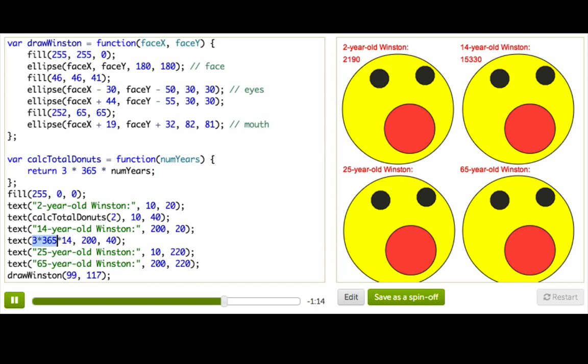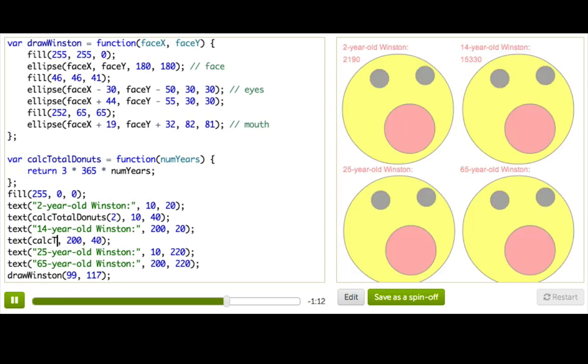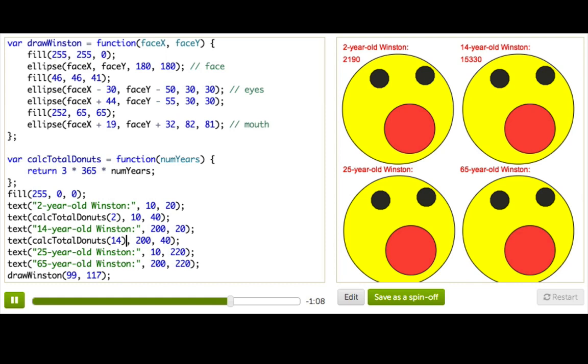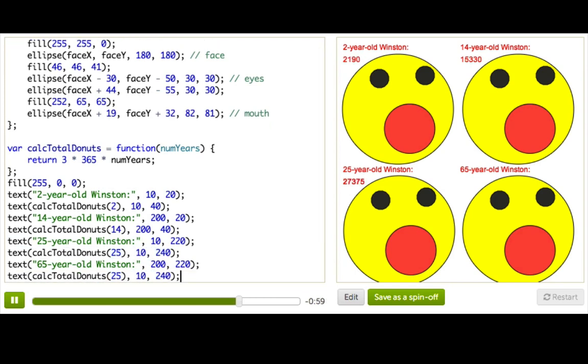All right, so now we can go through and calculate the total donuts at each point in life by just calling this function and passing in the number of years. Let's see. Calc total donuts, 25. Let's position this correctly. Calc total donuts, 65.